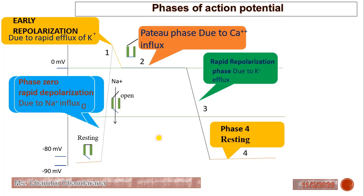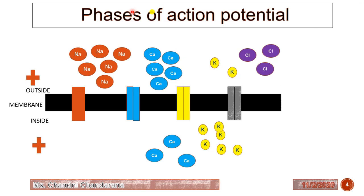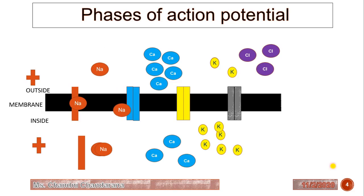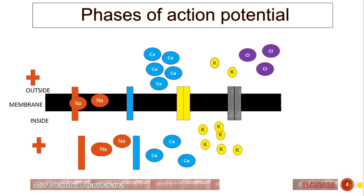Now we will see how the action potential works in detail by animation. Phase 4 is the resting phase. In this phase, sodium and calcium have higher concentration outside the cell, and potassium has higher concentration inside. In phase 0, the sodium channel opens, causing influx of sodium ions. This results in rapid depolarization, with more positive charge inside the cell compared to outside. After that, L-type calcium channels open up and there is a slow influx of calcium ions.